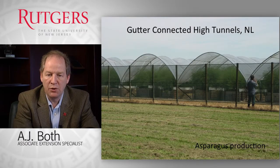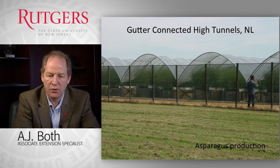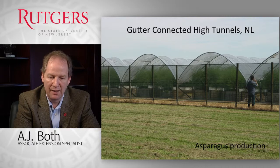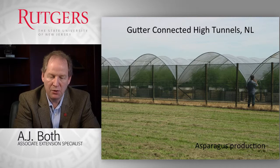We can also use gutter-connected versions of these high tunnels. Here you see an example of gutter-connected tunnels used for asparagus production in the Netherlands. We can use them for a variety of crops. By using gutter-connected systems, we reduce the surface area, making it cheaper and easier to maintain conditions underneath.